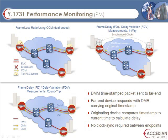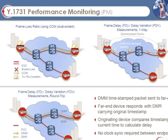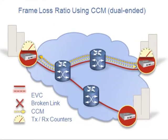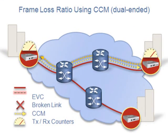In addition to CFM, Y.1731 also supports a number of performance monitoring functions to measure frame loss, delay, and jitter. CCM messages are used to determine bidirectional frame loss ratios for a service. Transmit and receive counters at the service endpoints measure the number of received versus dropped packets, and the ratio is calculated from this data. It's important to note that this technique only provides an estimate of frame loss in the link, since it only records dropped CCM packets and does not record loss statistics for actual customer traffic.